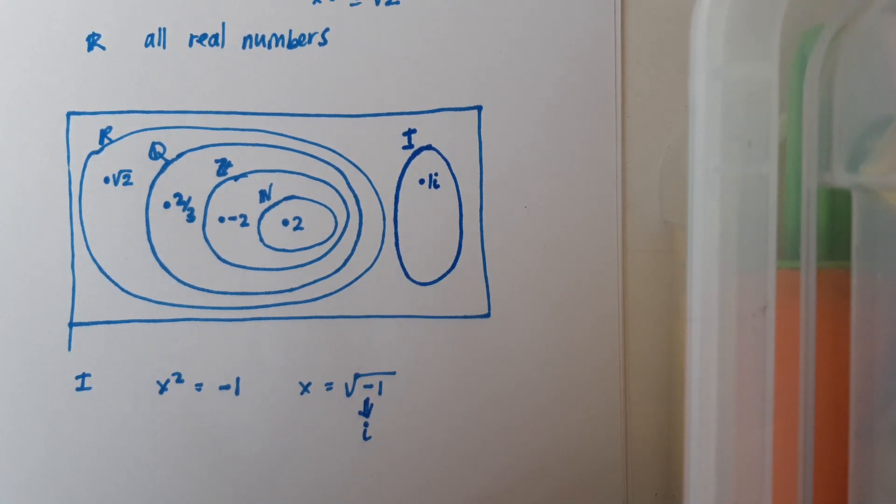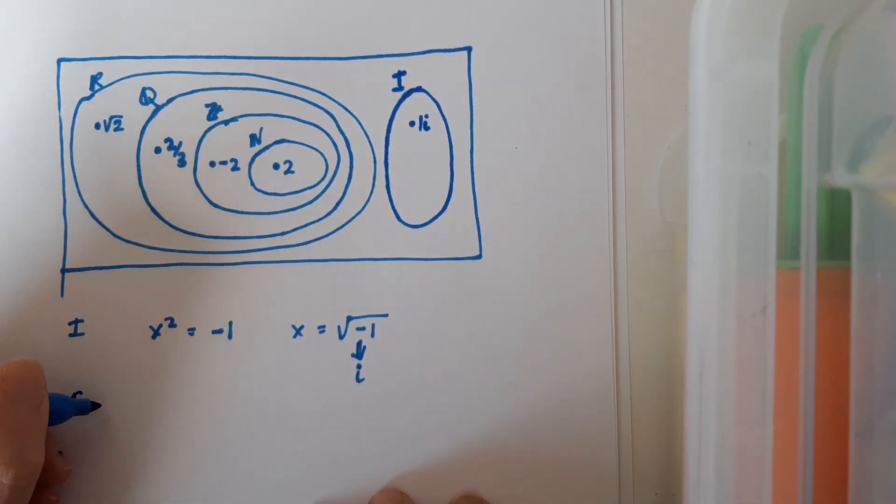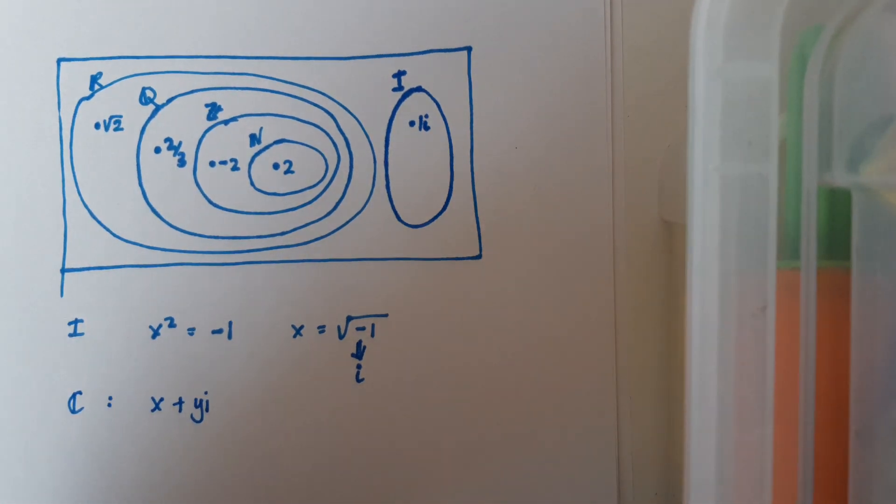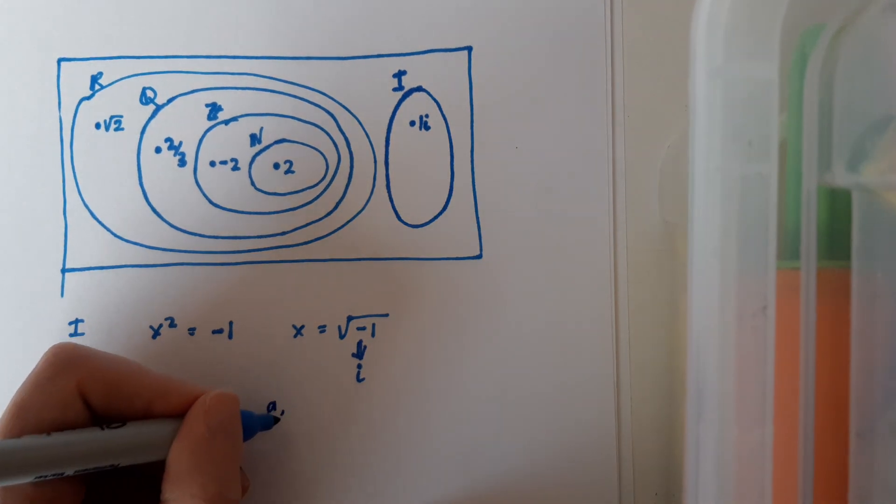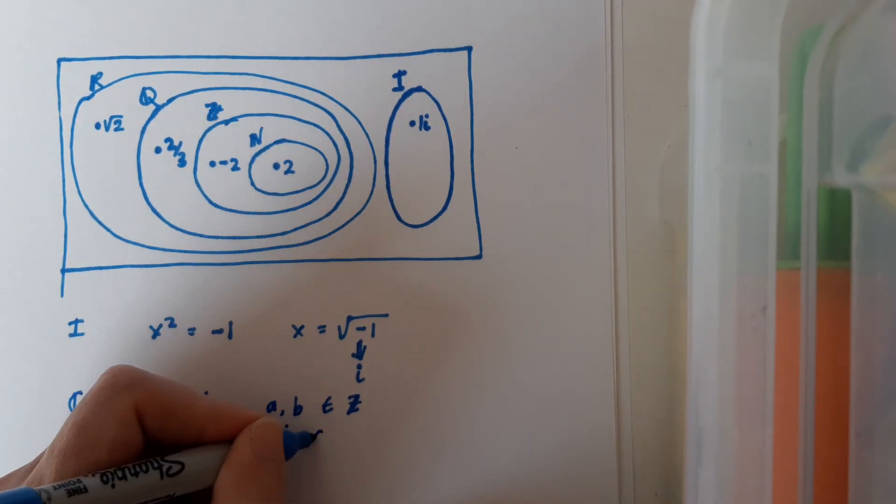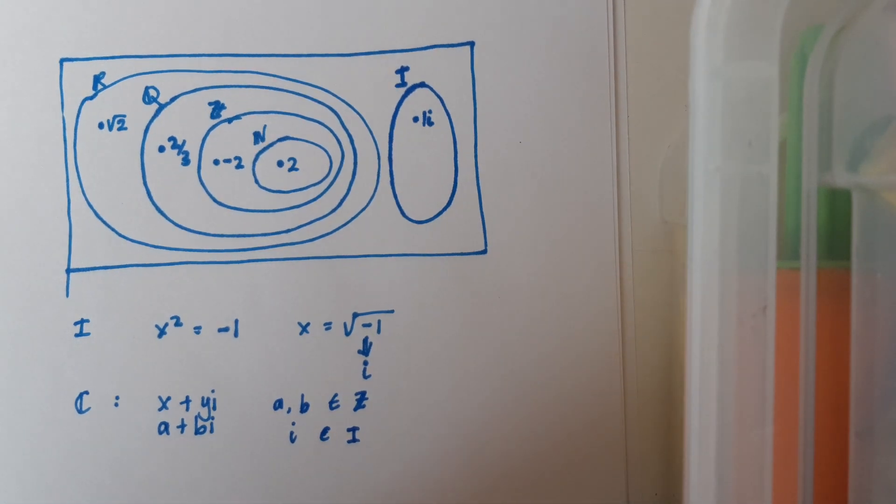And complex numbers then are just going to be a combination of real numbers and imaginary numbers. So when we say complex, we don't mean that they're complicated. We mean that they are a combination of different values from the real numbers and the imaginary numbers. So complex numbers are numbers that are written in the form x plus yi, or sometimes you might see a plus bi, where a and b themselves are integers and where i is an element of the imaginary number set. i will always represent the square root of minus 1.